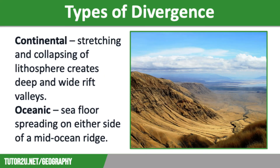There are two types of divergence. The first is continental, where stretching and collapsing of the lithosphere causes the land between the faults to collapse, creating deep and wide rift valleys such as the East African Rift Valley, pictured on the screen, which runs through Ethiopia, Kenya, the Democratic Republic of the Congo, Tanzania, Uganda, Burundi, Zambia, Malawi and Mozambique.